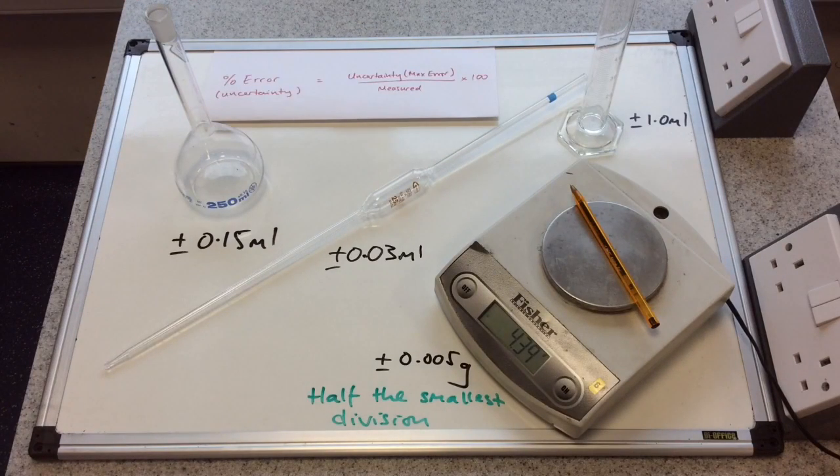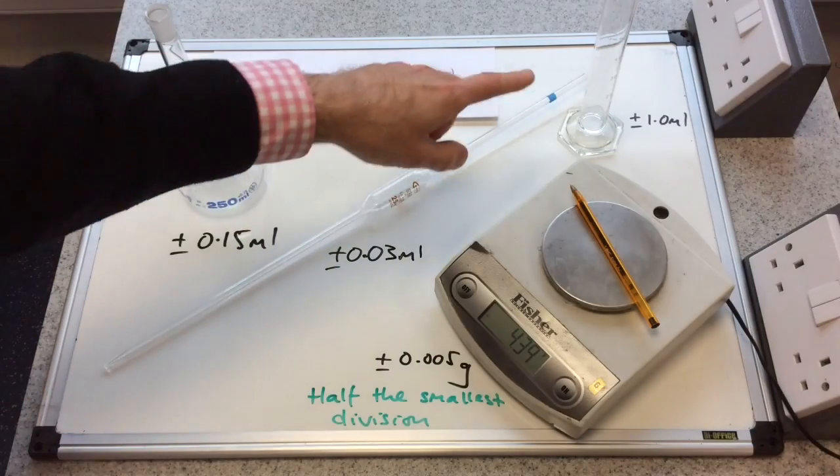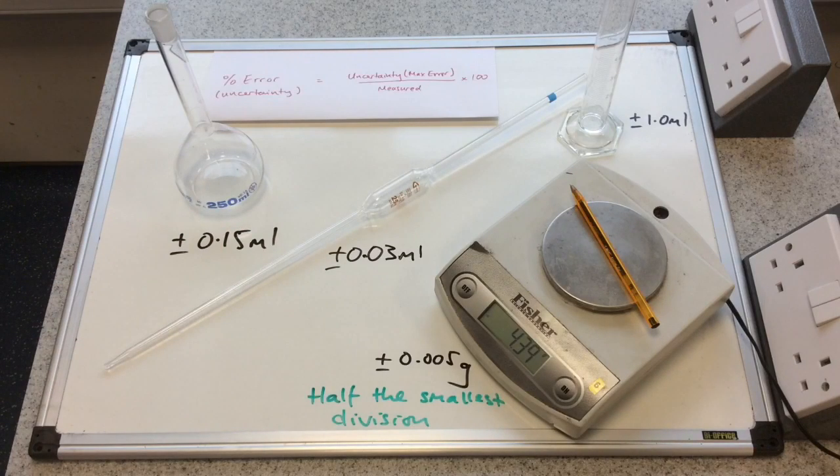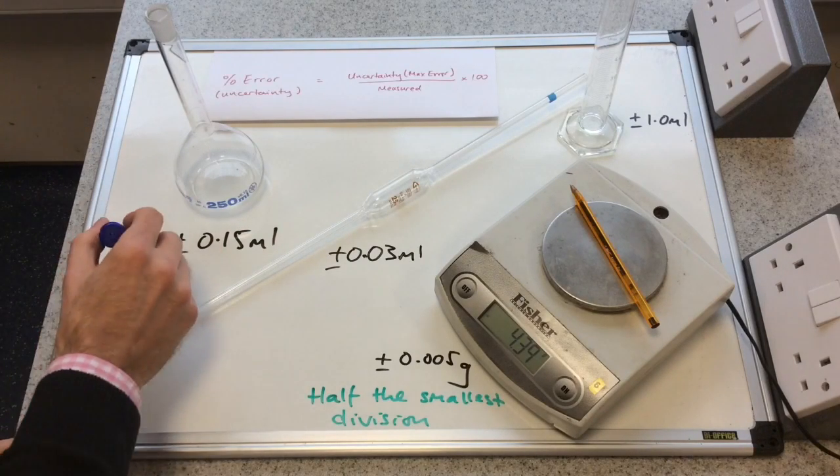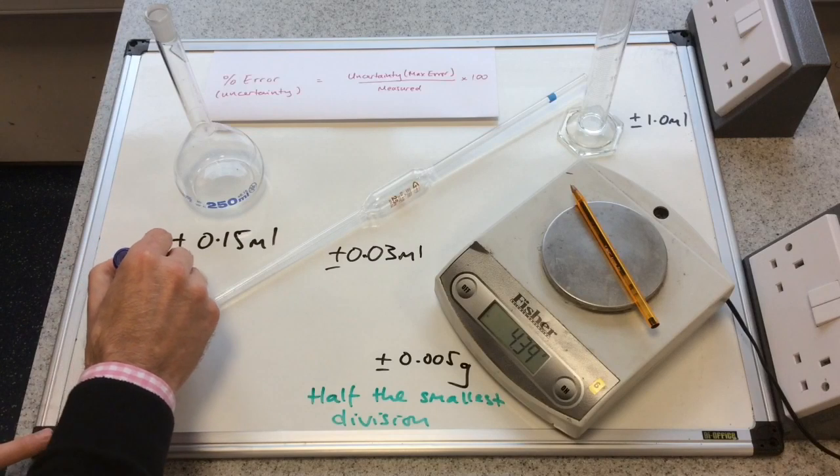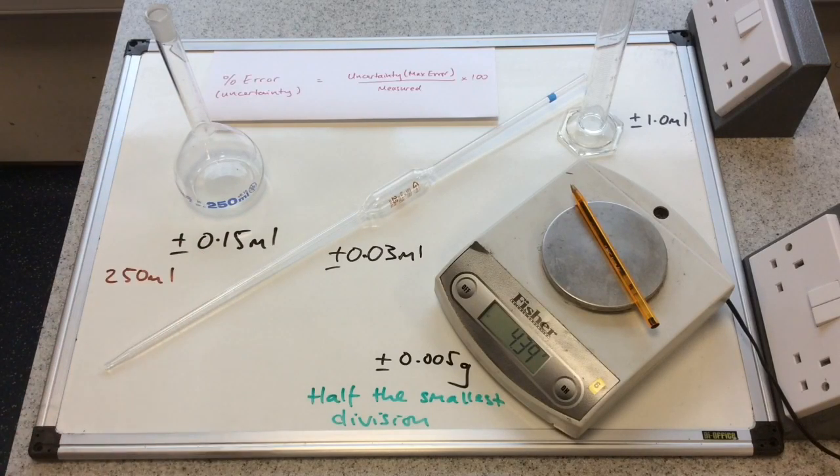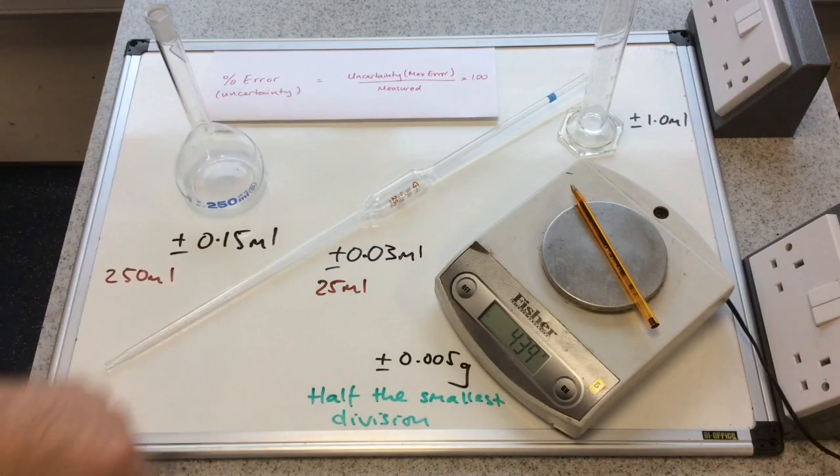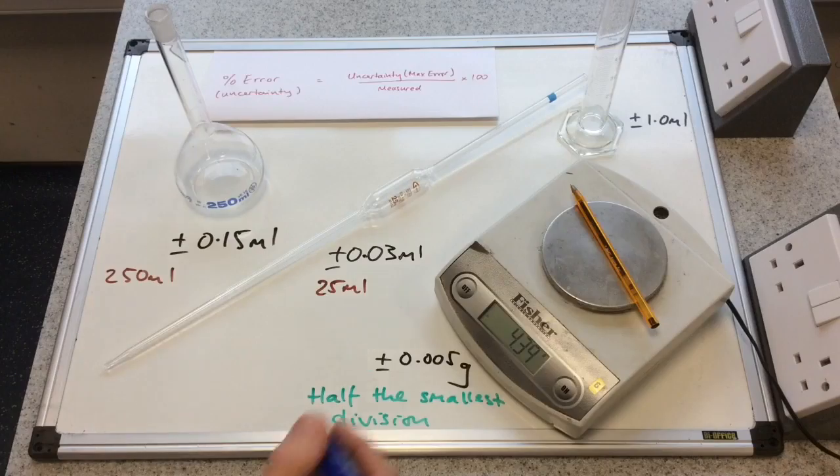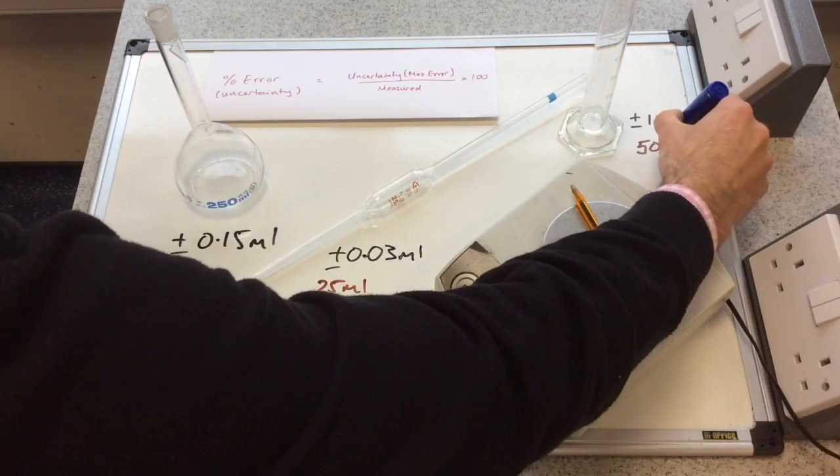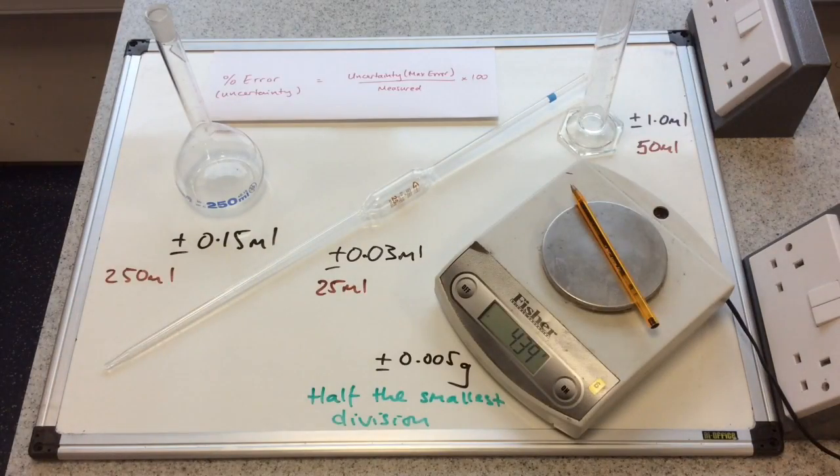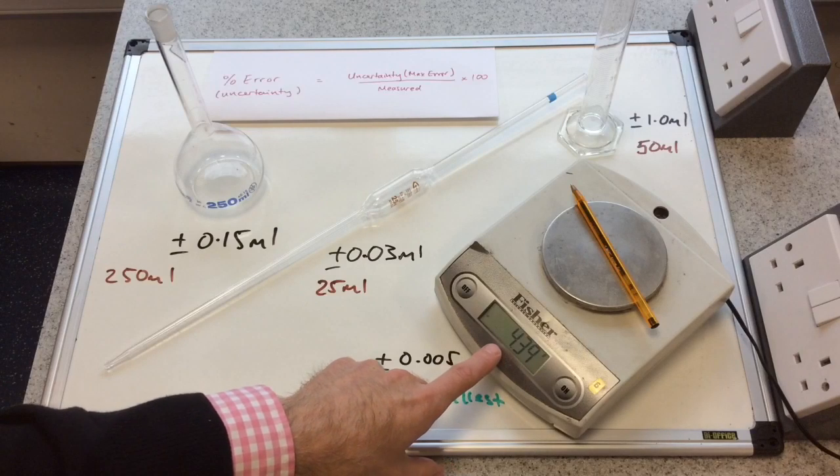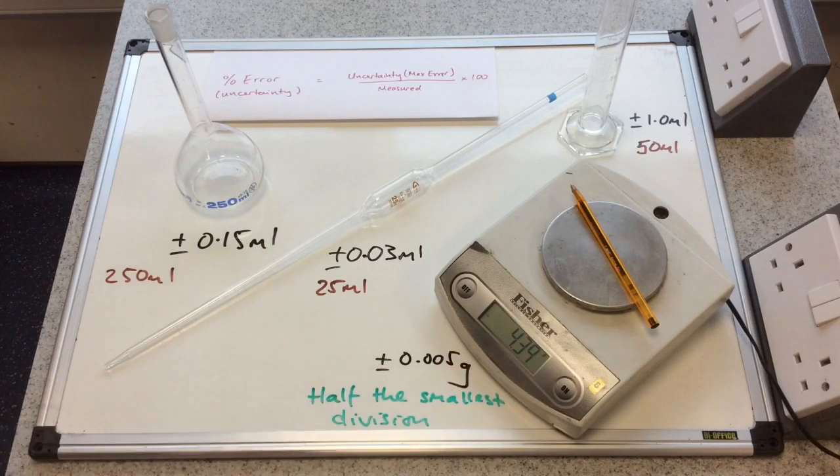So a quick task for you to try. Let's calculate the percentage error or the percentage uncertainty in these four pieces of apparatus as we have them at the moment. So we've got 250 milliliters of solution measured in the volumetric flask, 25 milliliters of solution measured by this pipette, and let's say we use the measuring cylinder to measure out 50 milliliters, and hopefully if this doesn't flicker too much, it's pretty still at the moment, 4.39 grams on the balance.